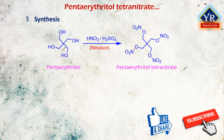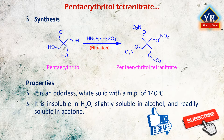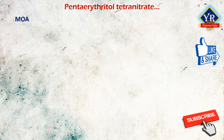Penta erythritol tetranitrate may be synthesized by a simple nitration reaction of penta erythritol with nitric acid, using 2,2-bis(hydroxymethyl)-1,3-propanediol instead of glycerol as the starting material. It is an odorless white solid with a melting point of 140 degrees centigrade. It is insoluble in water, slightly soluble in alcohol, and readily soluble in acetone.